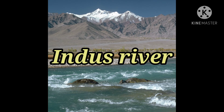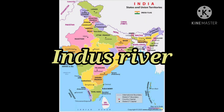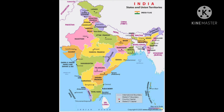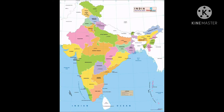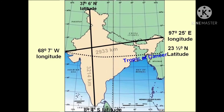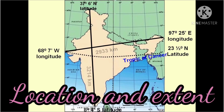India is the seventh largest country in the world. It occupies 2.4% of the total land area of the world.